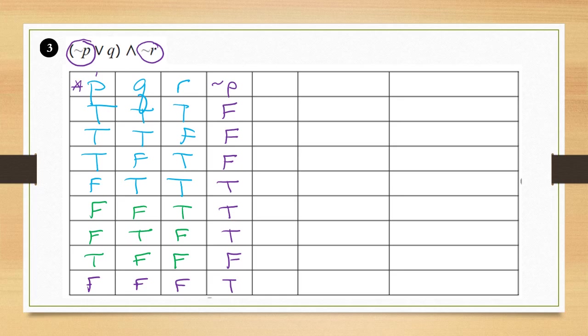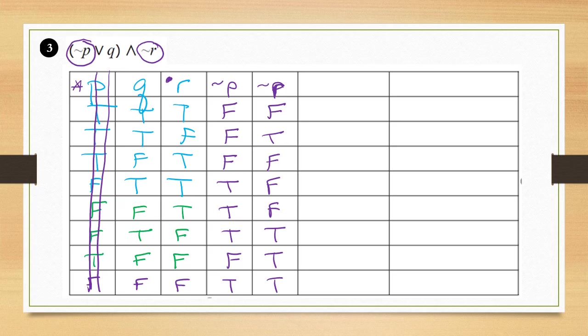After filling in the not p column using the opposites of column p, we no longer need column p. Then we create a not r column by taking the opposite of all values in column r. After filling that in, we no longer need the original r column.